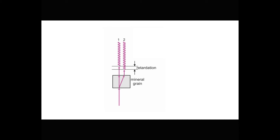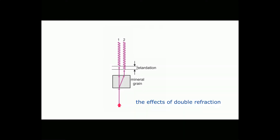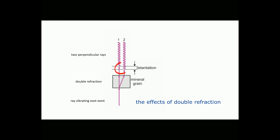All anisotropic crystals cause double refraction. When a polarized beam of light enters a crystal from below, it's split into two rays: a slow ray and a fast ray. When the two rays leave the crystal, the fast ray is ahead of the slow ray by some distance called the retardation.